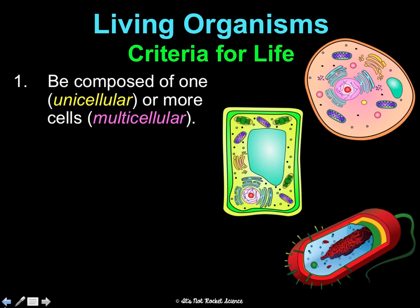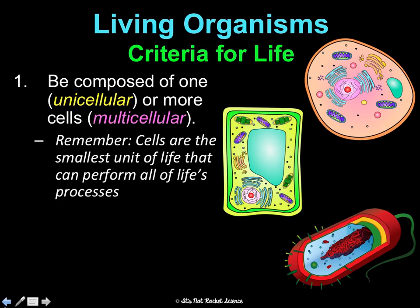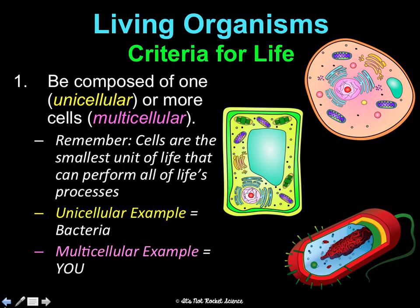One: you have to be made of cells. If you remember from our cell unit and cell theory, cells are the most basic unit of life. It doesn't matter if you're a bacterium made of one cell — unicellular — or a human made of trillions of cells — multicellular. You just have to be made of cells. Cells are the smallest unit of life that can perform all of life's processes.